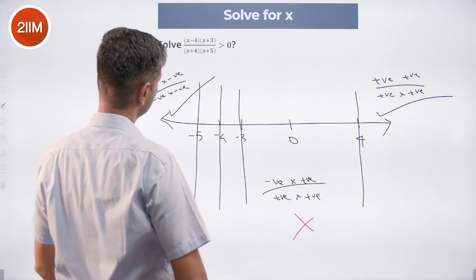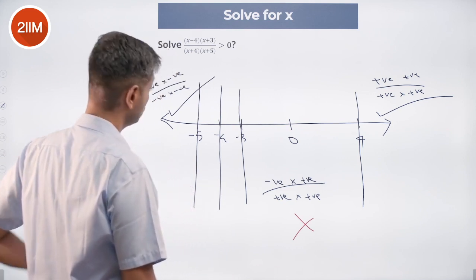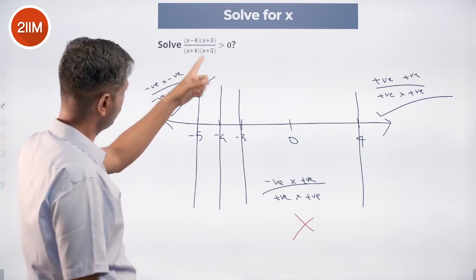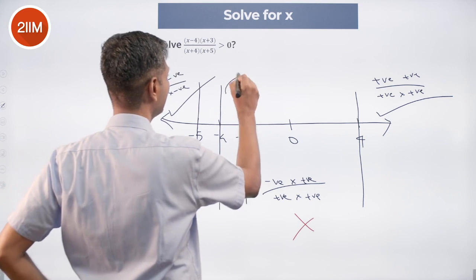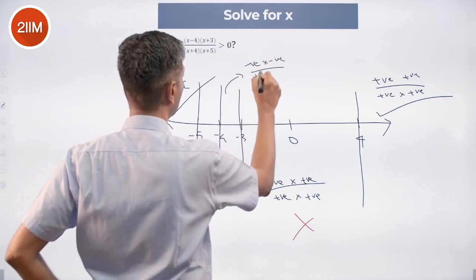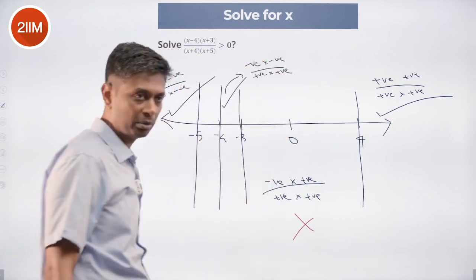Minus 4 to minus 3. x minus 4 will be negative. x plus 3 will be negative. Minus 3.5 plus 3. x plus 4, x plus 5 be positive. Here, negative into negative by positive into positive. Here to work positive by positive.